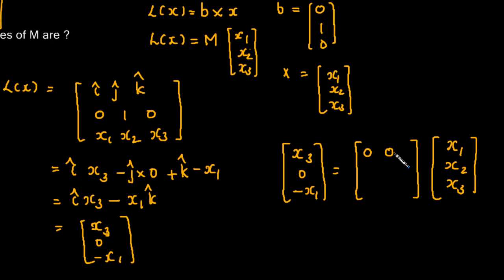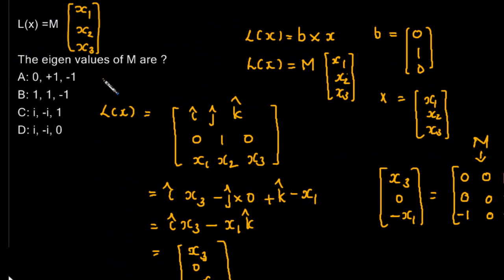Obviously the matrix has to be: first row [0, 0, 1] so that 0×0 + 0×0 + 1×x3 equals x3. Here we need 0, so this row must be completely [0, 0, 0]. And the third row we need minus x1, so here it is [-1, 0, 0]. So we have found out what is M, but we are asked to find the eigenvalues of M.